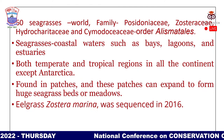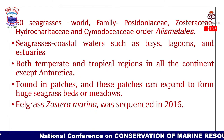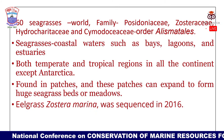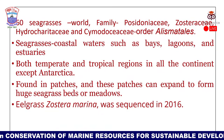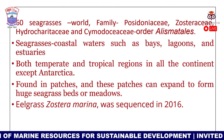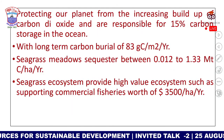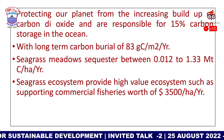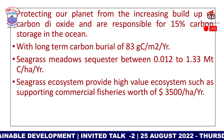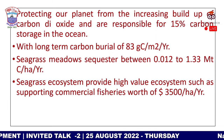Seagrasses are found in both temperate and tropical waters — everywhere except Antarctica. They grow in patches that can expand to form huge seagrass beds or meadows. Near Pichavaram, a place called Pildumedu had its seagrass meadows largely washed away during the 2004 tsunami. The eelgrass Zostera marina was sequenced in 2016, and recently in Australia, Posidonia australis was also sequenced.